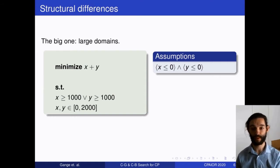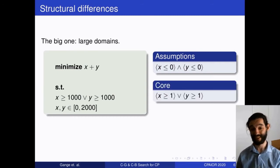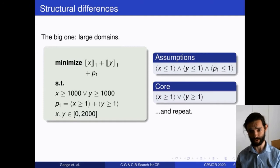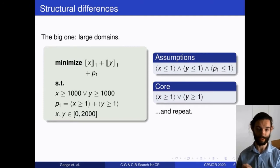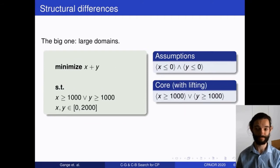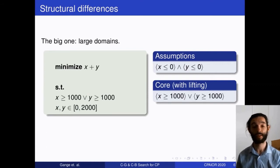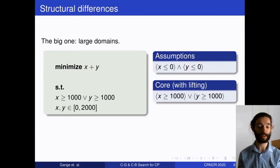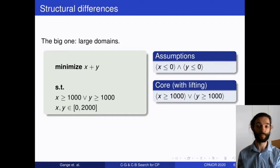Modern LCG solvers do lifting: even if we assume x and y take value zero, we might get a stronger core saying one of them must take a penalty of 1000. But with our reformulation we can still only slice off individual penalty terms, so even knowing we can jump straight to 1000, in the reformulation we'd introduce a thousand individual penalty slices. That's not ideal.